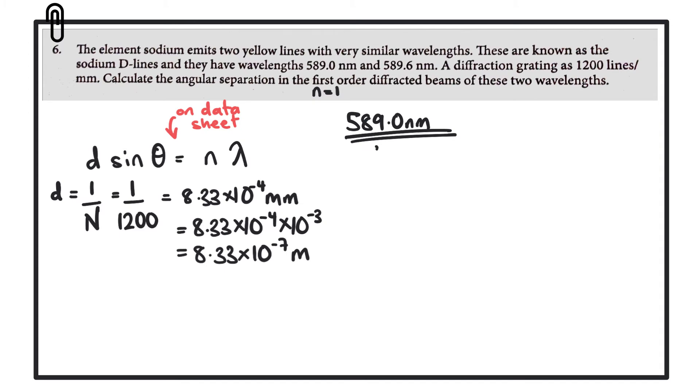So the equation becomes 8.33 by 10 to the minus 7 multiplied by sine theta is equal to 1 multiplied by the wavelength, which is 589 nanometers. If we start to rearrange this, I'm going to get rid of the 8.33 by 10 to the minus 7, bring it over to the right hand side where it will become a divide. So we have 589 nanometers divided by the grating element.